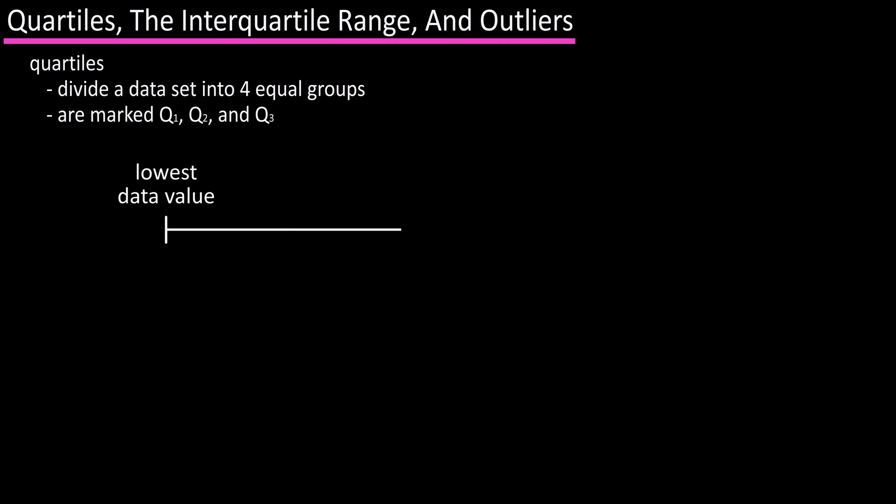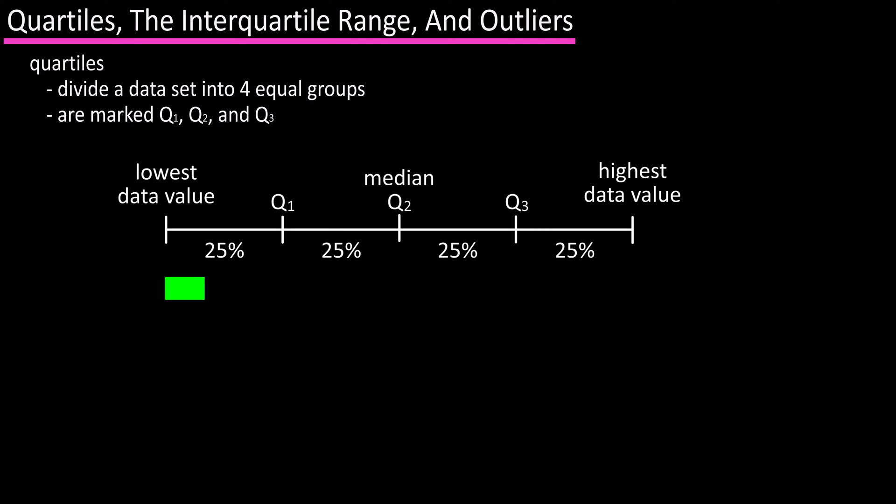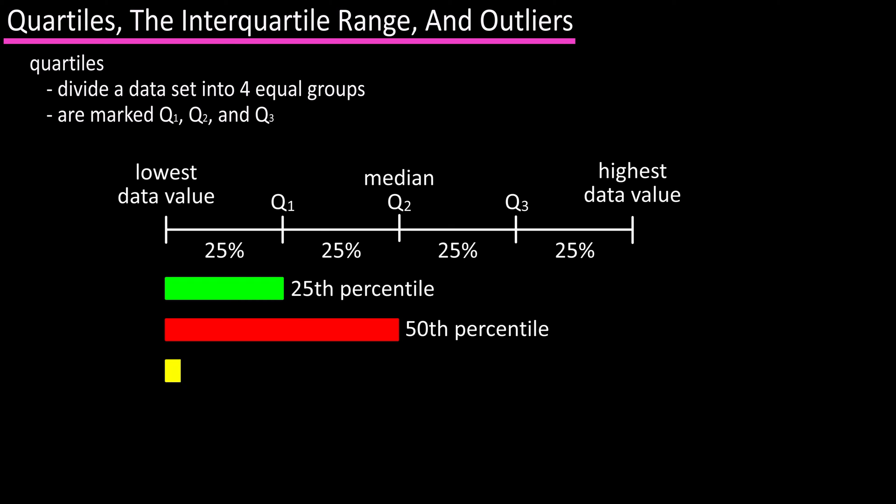If we draw a line with the lowest data value to the left and the highest data value to the right, we can mark Q1, Q2, and Q3 at equal distances on the line, with each section being 25 percent. Q1 is the same as the 25th percentile, Q2 is the same as the 50th percentile, and Q3 is the same as the 75th percentile.